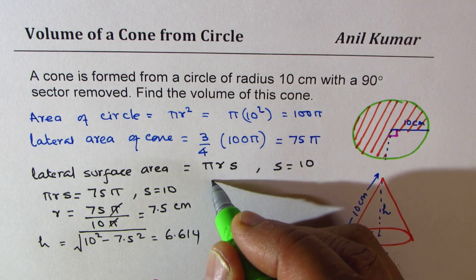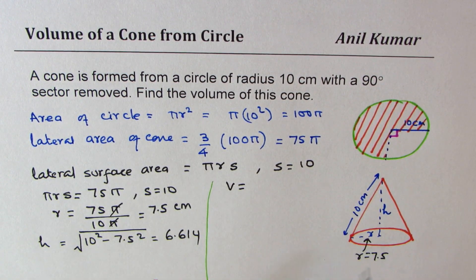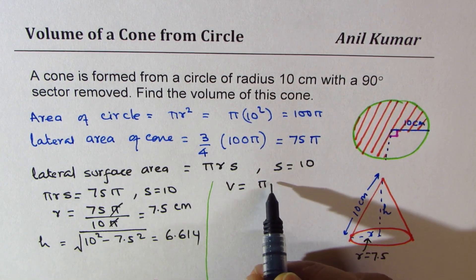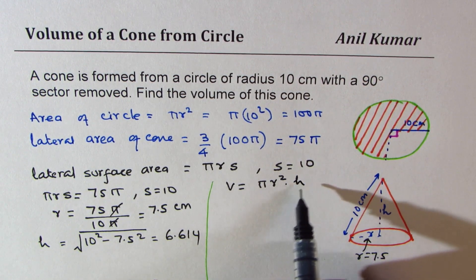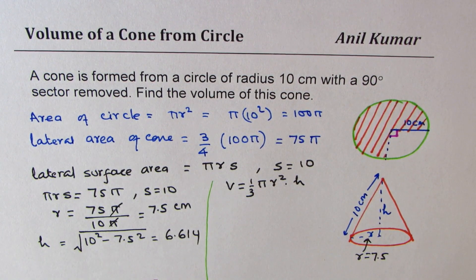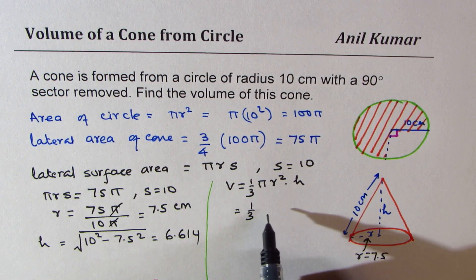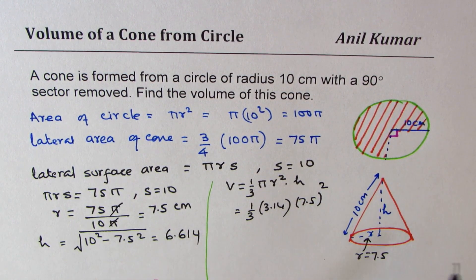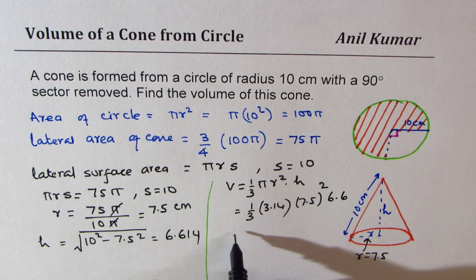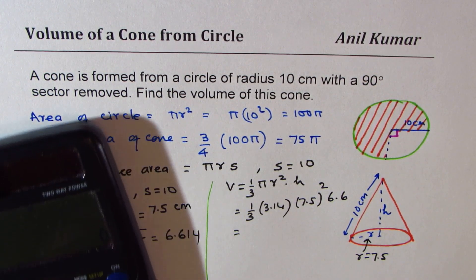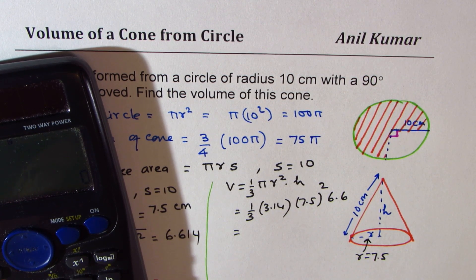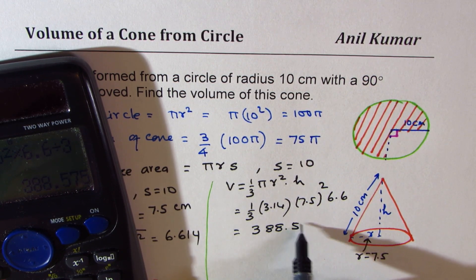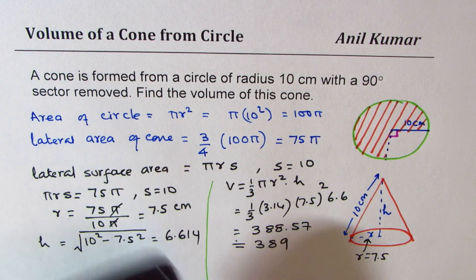Now once we know radius and height, it's easy to find volume. What is volume of cone? The volume of cone is area of base which is πr² times height and one third of it since it is a cone. So one third of πr²h. We can substitute the values: one third of π which is 3.14, radius is 7.5 square, and height is 6.6. Let's multiply and get the answer. So we get 3.14 times 7.5 square times 6.6 divided by 3 equals to 388.57 rounded to 389 and units being centimeter cube.